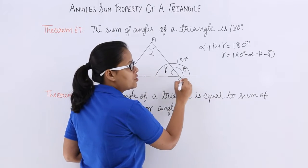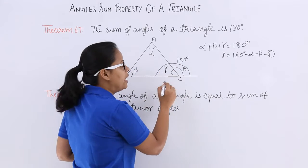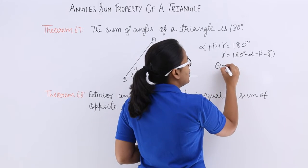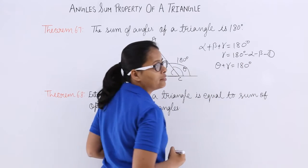You can see here this is a straight angle whose value is 180 degrees, and these are the angles which constitute this 180 degrees, which means theta plus gamma equals 180 degrees.